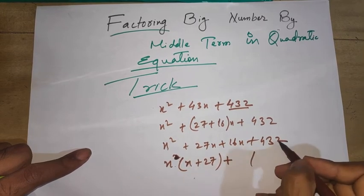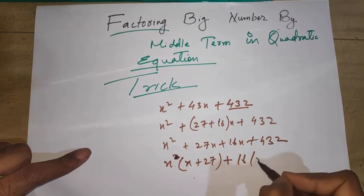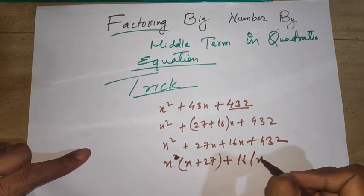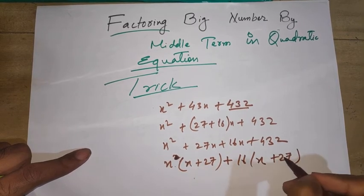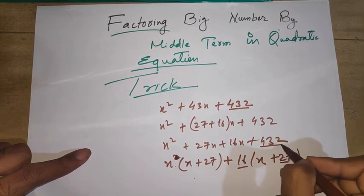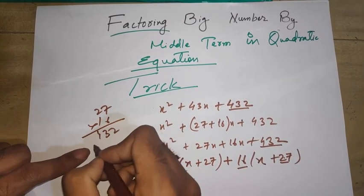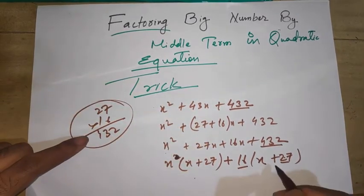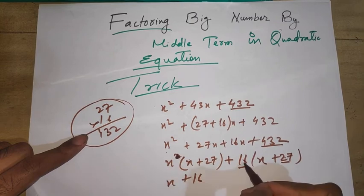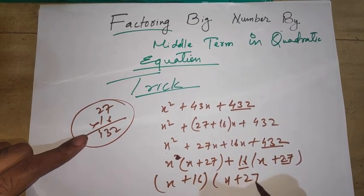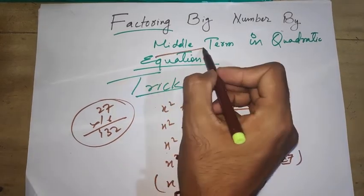Here 16 will be common because 432 is divisible by 16, so 16(x + 27). You can verify by multiplying. At the end I can say (x + 16)(x + 27). So this was the trick for factorizing middle term with a big number.